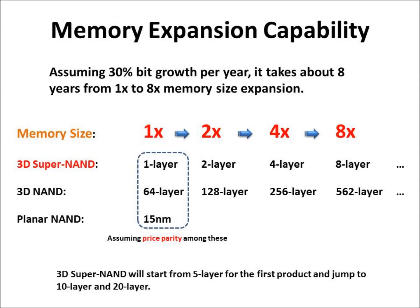Let's check how we could expand memory size. Assuming 30% bit growth per year, it takes about 8 years from 1x to 8x memory size expansion. If bit growth is about 50%, then it'll take just 5 years to reach 8x. So it'll happen in a short time. For 3D SuperNAND, there is no problem with memory expansion, because the process architecture is well designed, and therefore it could be cost-competitive with just one layer. However, 3D NAND fails to be cost-competitive until 64 layers, because of a wrong process architecture. Unfortunately, 3D NAND used up its original idea at 64 layers to be cost-competitive with vertical cell stacking. From now on, 3D NAND should use string stacking of 64 layers to increase memory size. So fundamental issues such as manufacturing difficulties including low yield will exponentially increase.